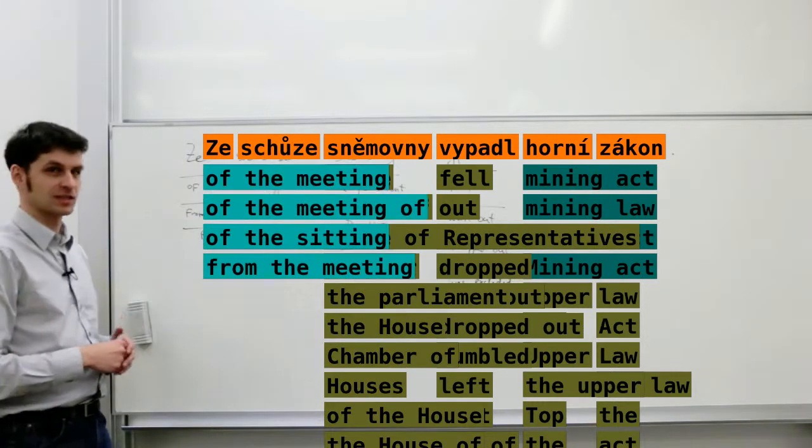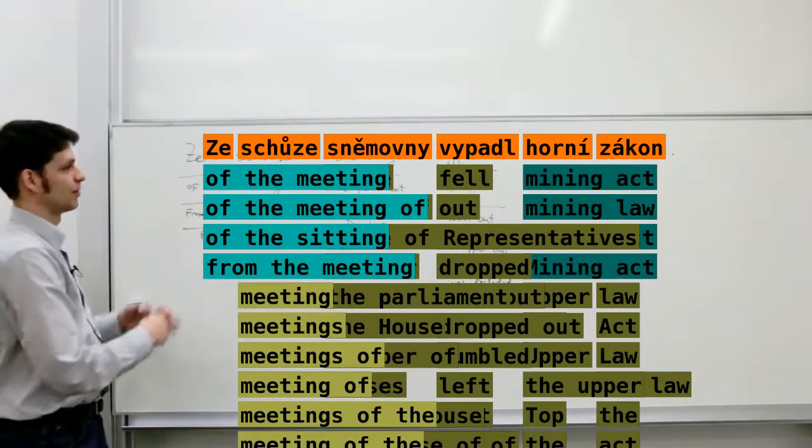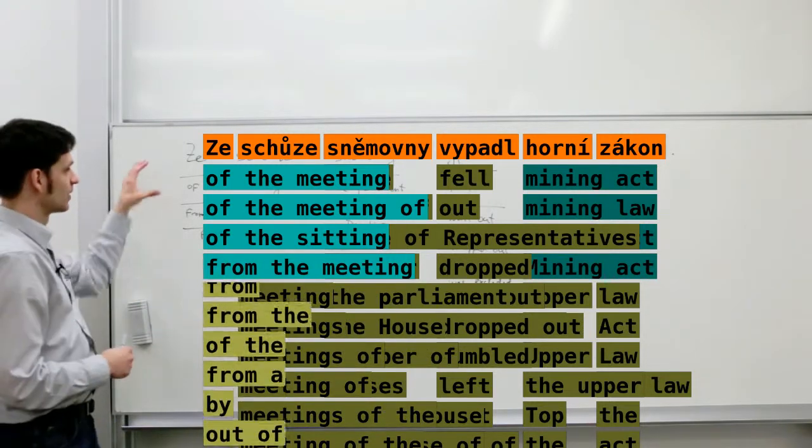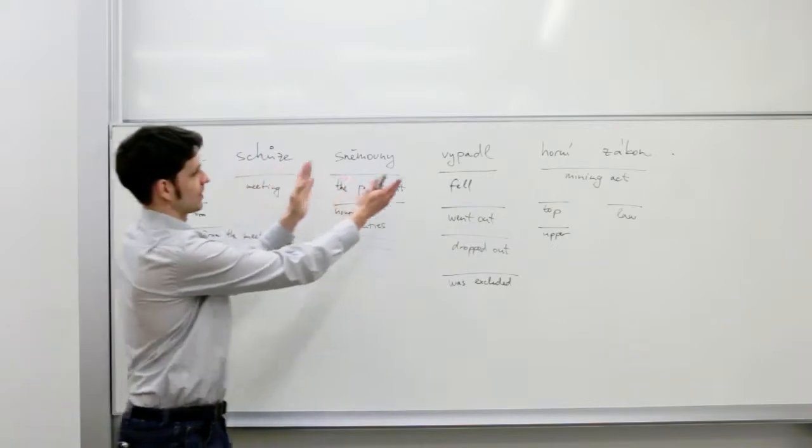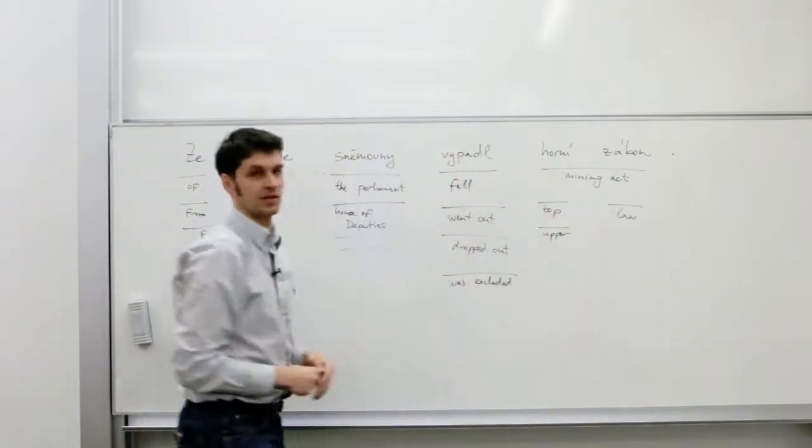So this was kind of a preprocessing step, the collection of all translation options. For the given input sentence, we know how each of its spans can be individually translated.